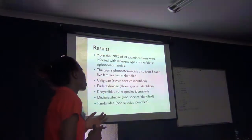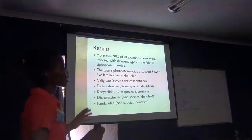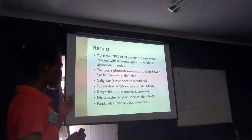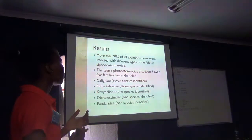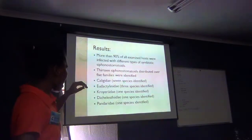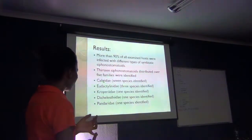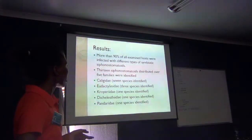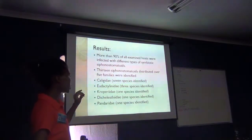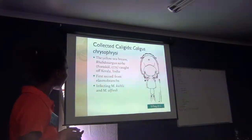We found that more than 90% of all the examined hosts were infected with different types of symbiotic syphonostomatoids. From that, we were able to identify 13 different species distributed over five families. In the family Caligidae we were able to get seven species, in Eutatinidae three species, and from Croieridae, Dechelesidae, and Pandaridae we were only able to get a single species from each family.